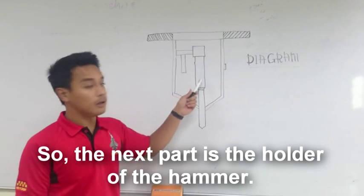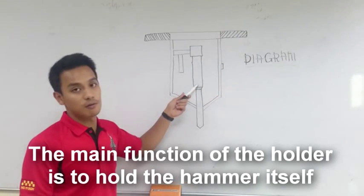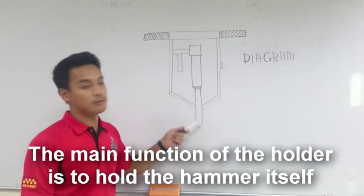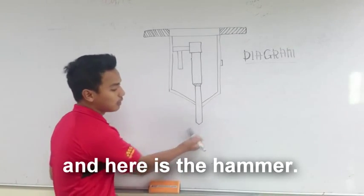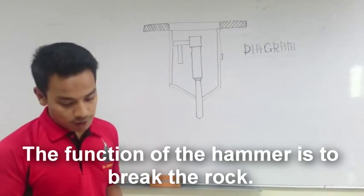The next part is the holder of the hammer. The main function of the holder is to hold the hammer itself, and here is the hammer. The function of the hammer is to break the rod.